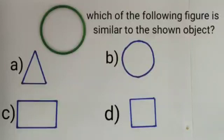Option A is triangle. Option B is circle. Option C is rectangle. Option D is square. The shown object is circular. Which is our B option? So, we will put a tick on option B.